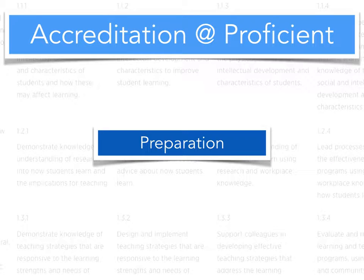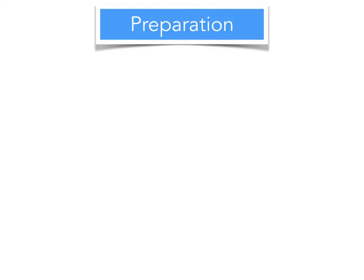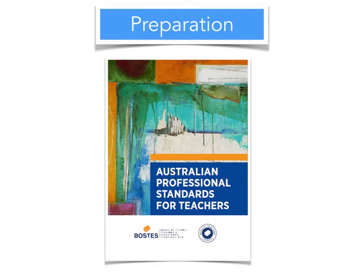This video will provide an overview of some of the key things that you need to do in preparation as you seek to become accredited at Proficient. The first thing you need to do is become familiar with the Australian Professional Standards for Teachers, and the actual standards can be found on the Boztest website.